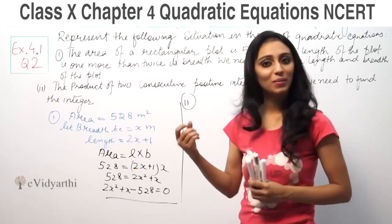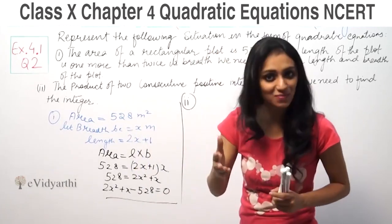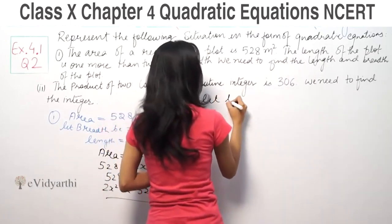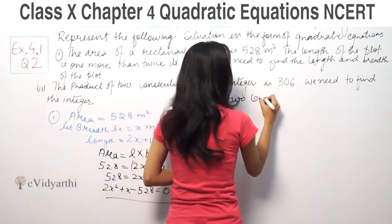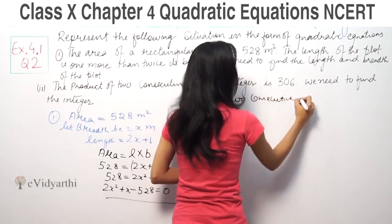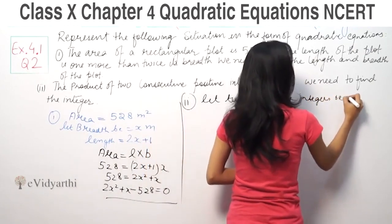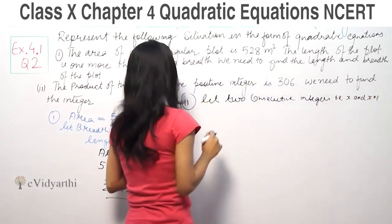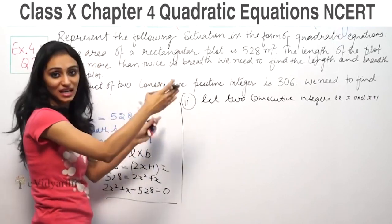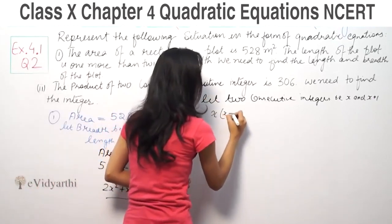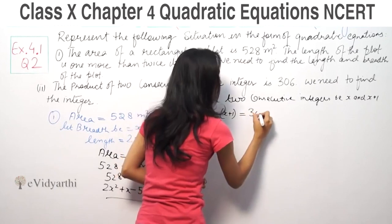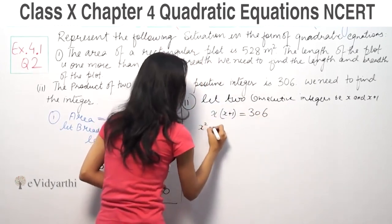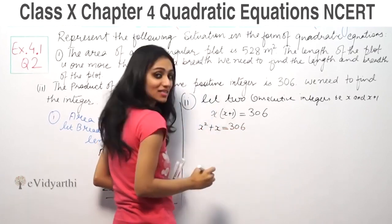So if one number is x, then the next number will be x plus 1. Let two consecutive integers be x and x plus 1. The question says product of two consecutive integers. When they multiply, the product is 306. So x square plus x equals 306.